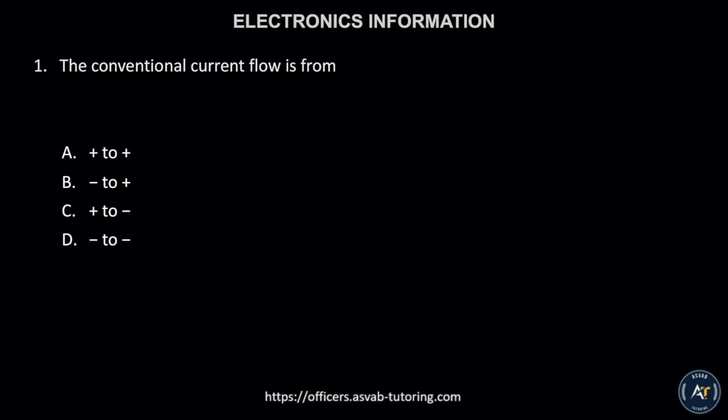Number 1. The conventional current flow is from: A. Positive to positive, B. Negative to negative, C. Positive to negative, or D. Negative to positive.